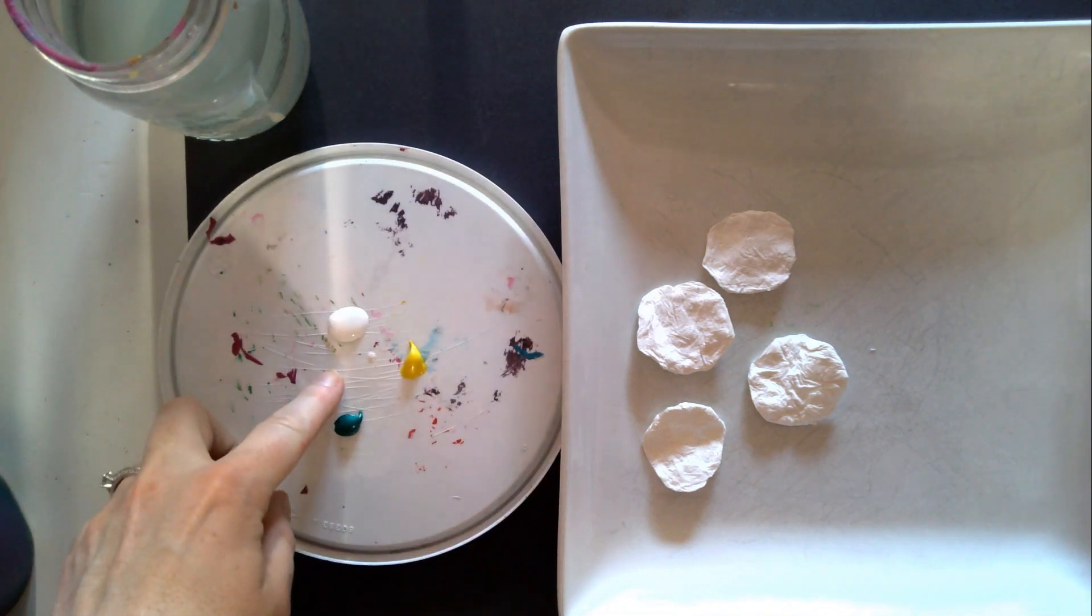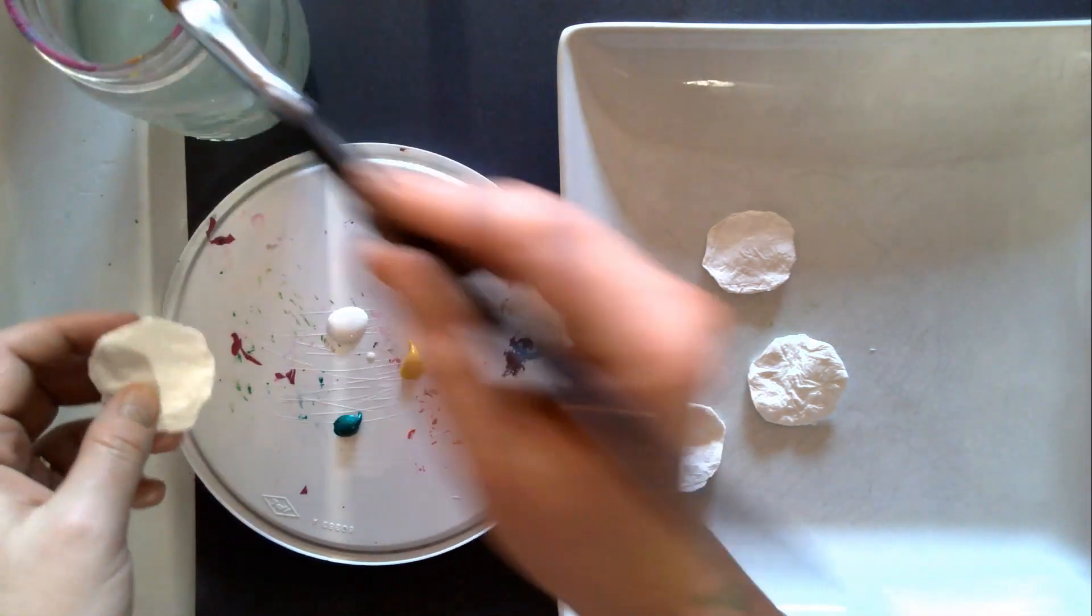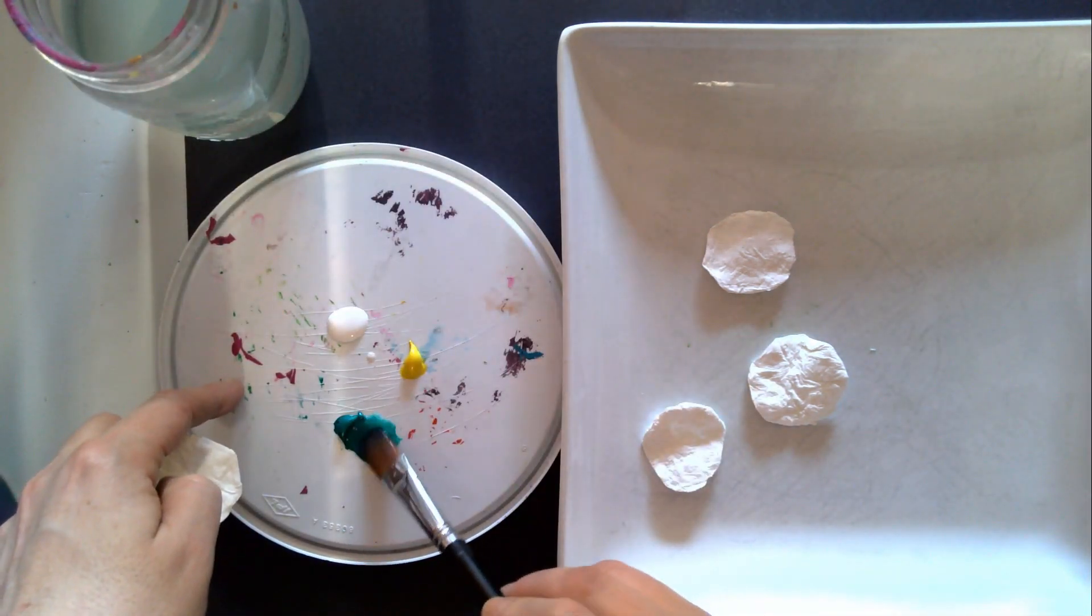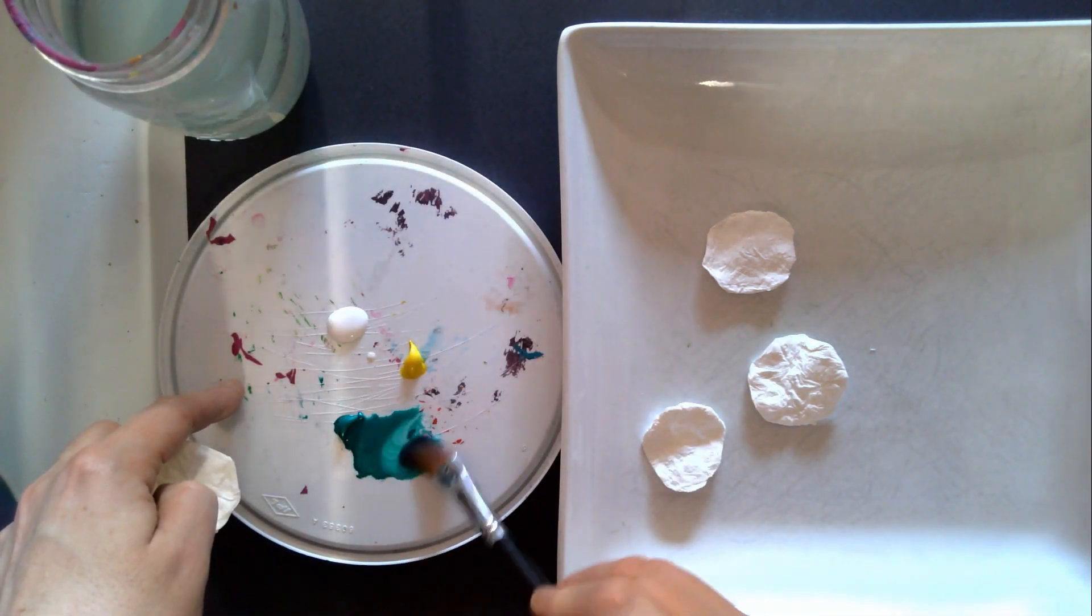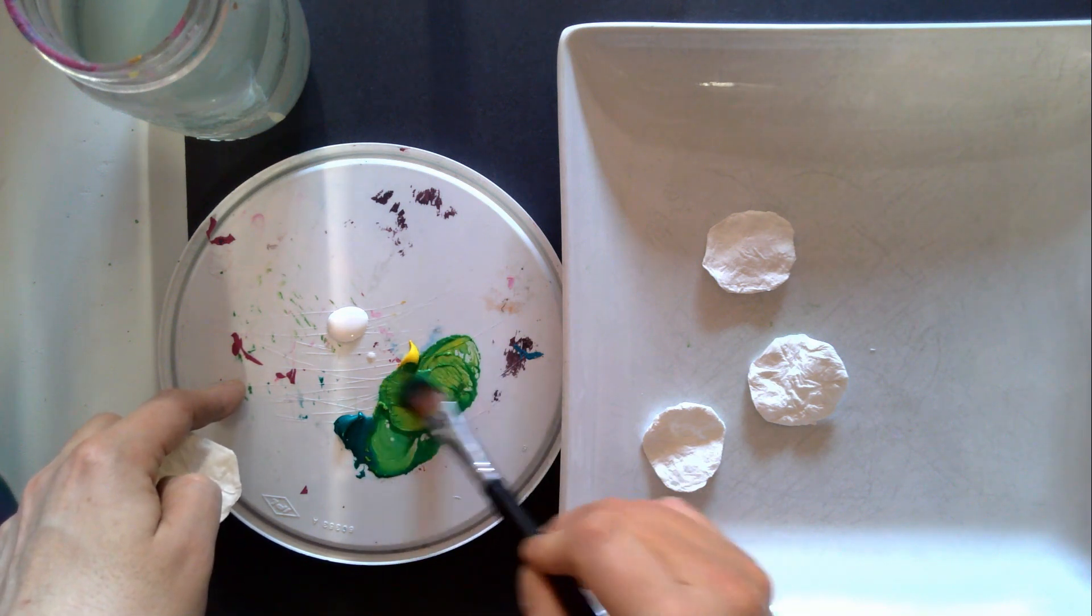But we want to water this down so that it acts more like watercolour paint. I am going to dip my brush in, get a little bit. You can see how it's loosening up on here. And I'm going to drag some yellow just to get that more pickly colour that I'm going for.